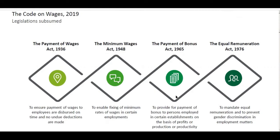Welcome to this new session on the Code on Wages 2019, which was passed and approved in 2019. It is still pending for implementation, but this rule is one of the important keys for making reforms in the employment industry, doing business, and good governance. Here I'm starting with how this code came into existence.